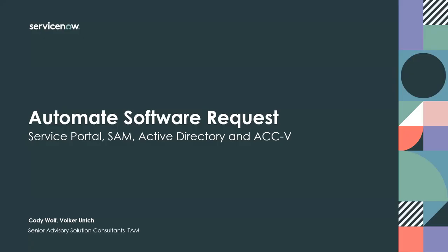Welcome. This is Cody Wolfe and Volker Unsch, and today we're going to look at how you can automate the software request process using Service Portal, SAM Pro, Active Directory, and ACCV. We have two use cases: how to deploy and request 7-Zip, and then we'll take a look at Office 2019 Pro.